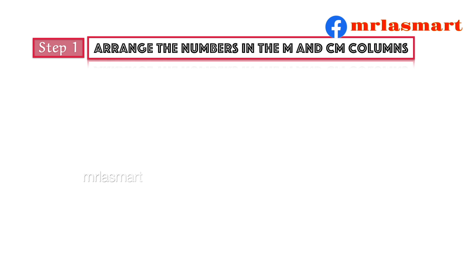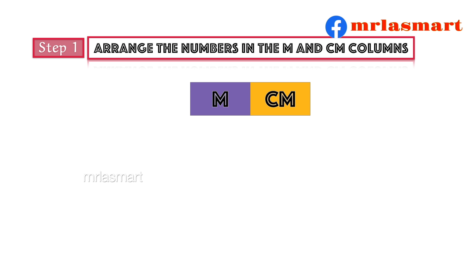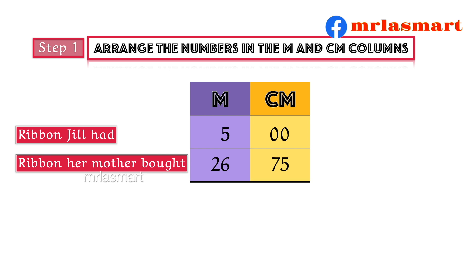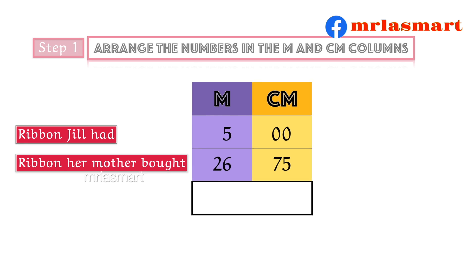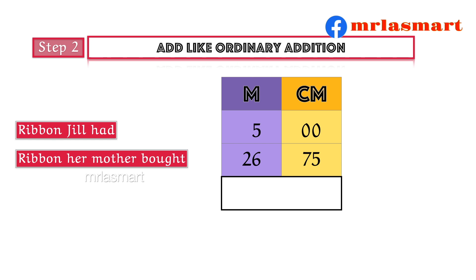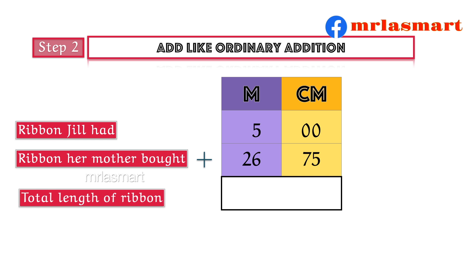Step 1: Arrange the numbers in the meter and centimeter columns — ribbon Jill had, and ribbon her mother bought. Step 2: Add like ordinary addition. Total length of ribbon.